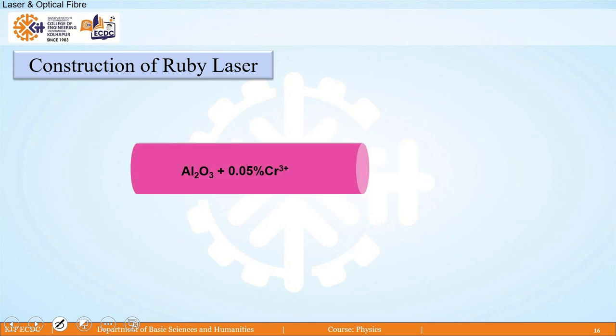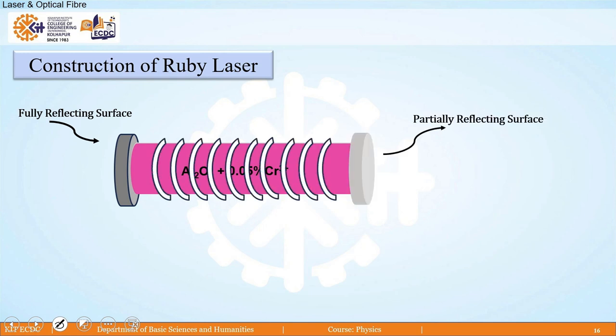We have to take this precious stone, then we have to make it in a proper form as you see in the figure in cylindrical shape, we have to grind it, polish it. Then one of the face of this cylindrical ruby rod, grind it, polish it and silverize it so that it becomes fully reflecting surface. And the face from which we want to get a laser, that we have to keep as partially reflecting one.